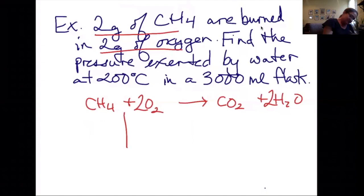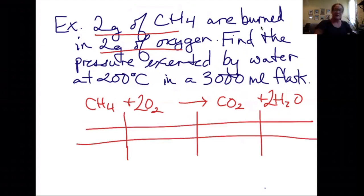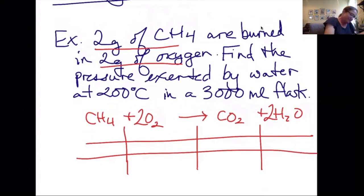Now setting up my ICE chart. I'm going to do my ICE chart in moles. I have 2 grams of CH4. So 2 equals moles times the molecular weight. CH4 has a molecular weight of 16. 2 divided by 16 gives me 0.125 moles of CH4.